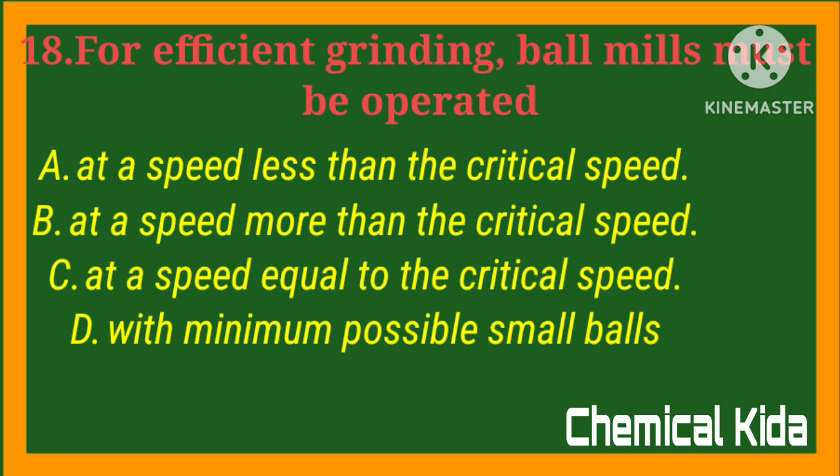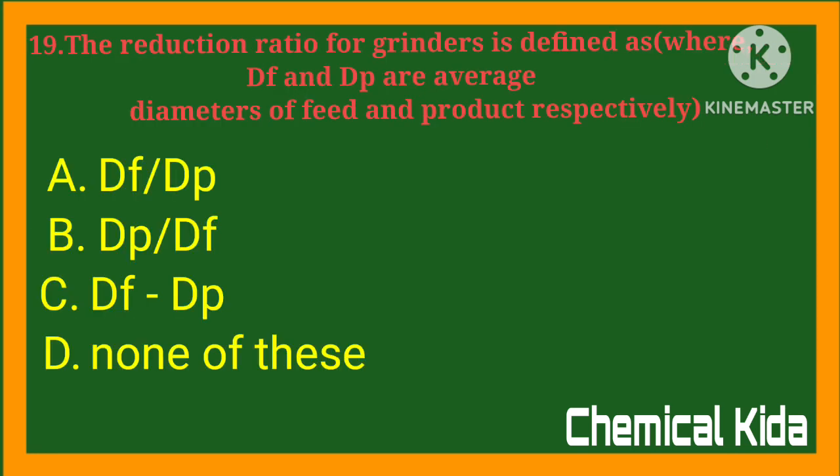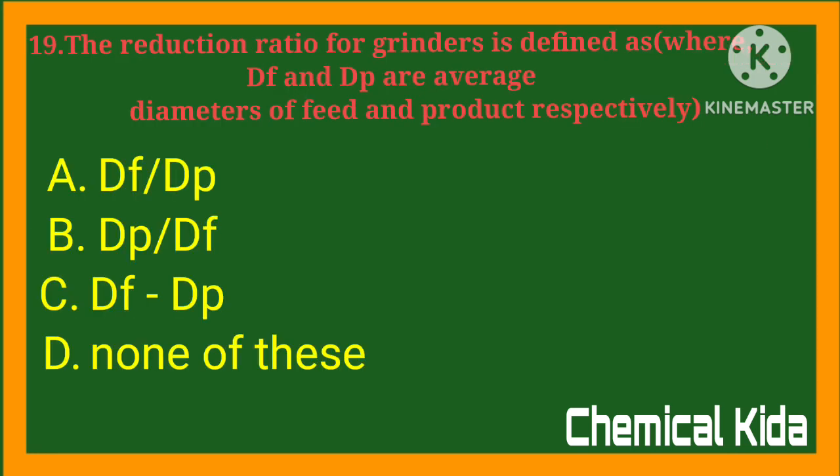For efficient grinding, ball mills must be operated: a) at a speed less than the critical speed, b) at a speed more than the critical speed, c) at a speed equal to the critical speed, d) with minimum possible small balls. Answer: a) at a speed less than the critical speed.